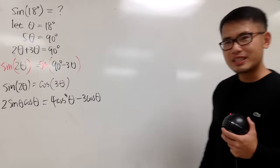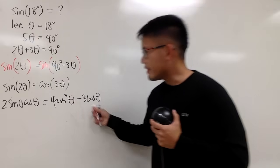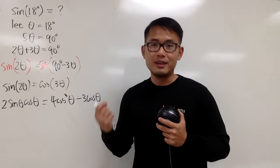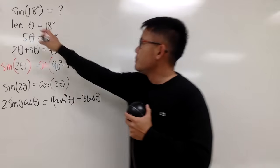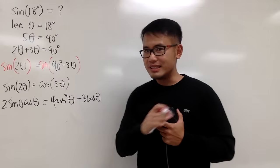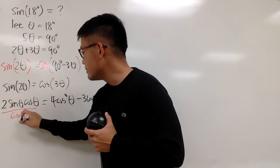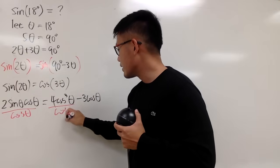Okay, now, what else can we do? Notice that this, this, and that, they all have a cosine theta factor, right? And because theta is equal to 18 degrees, cosine theta, it's definitely not zero. So, we can actually say bye-bye to the cosine, but divide everything by cosine theta.